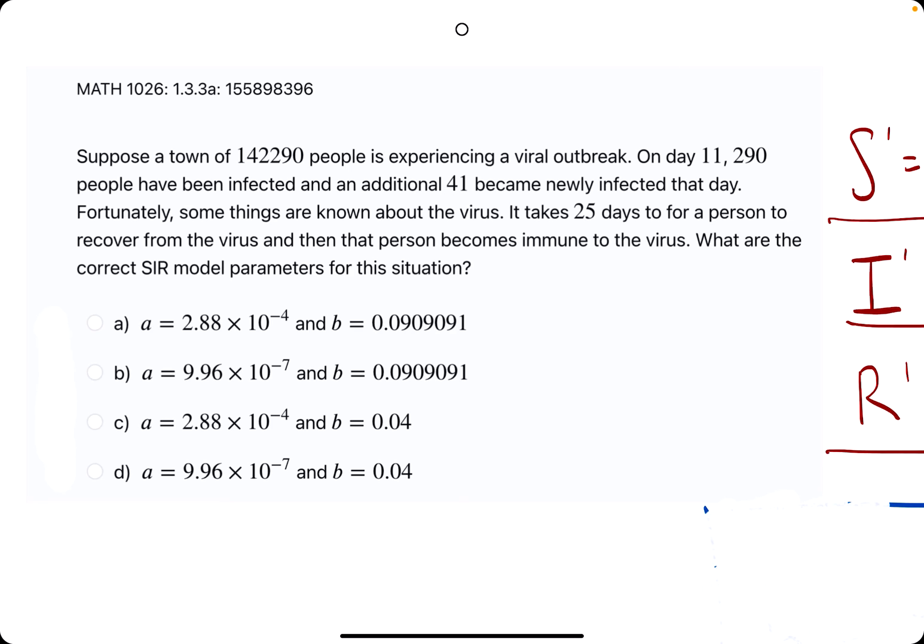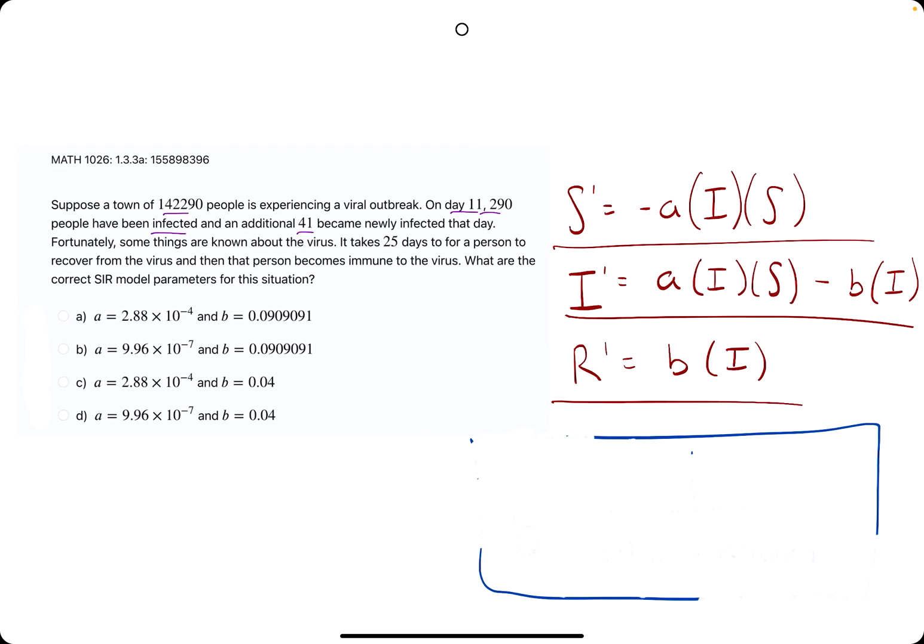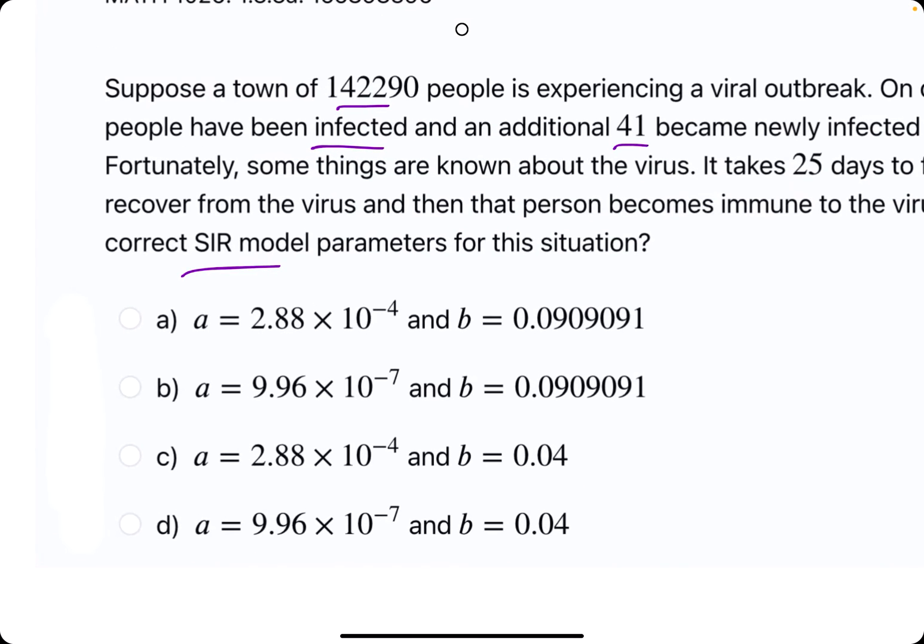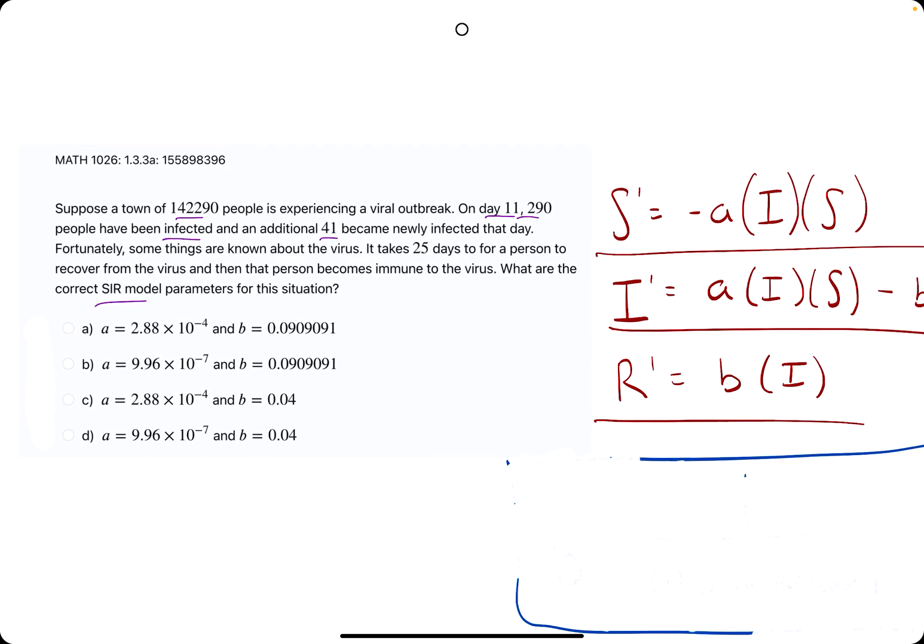Okie dokie. In this problem, they give us some information about the number of people in a town on day 11, so many people have been infected, 41, and so on and so forth. Basically, they are asking us what are the correct SIR model parameters, A and B, for this situation.